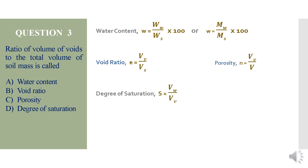Degree of saturation, represented by letter S, is the ratio of the volume of water present in a given soil mass to the total volume of voids — mathematically: Vw divided by Vv. For a fully saturated soil mass, the voids are fully filled with water, so numerator and denominator are equal, giving a degree of saturation of 1, that is 100% saturated.